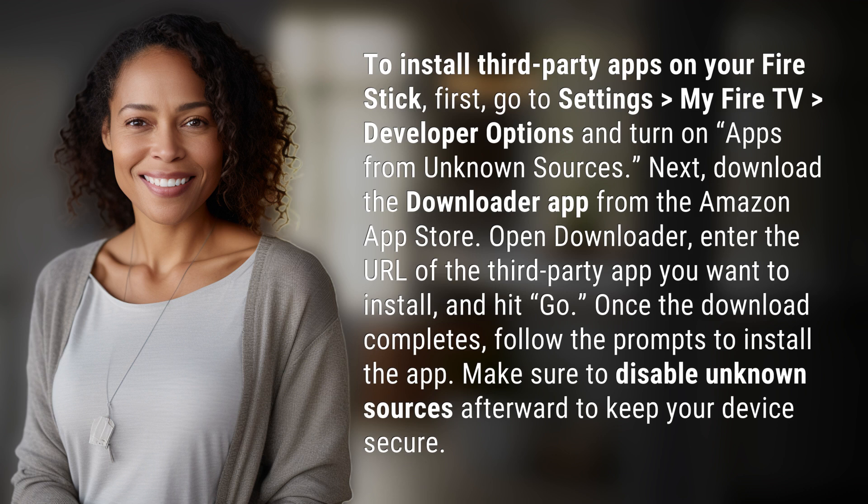Next, download the Downloader app from the Amazon App Store. Open Downloader, enter the URL of the third-party app you want to install, and hit Go.